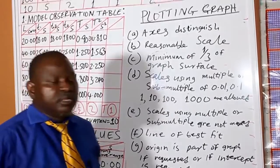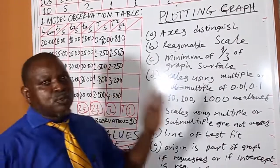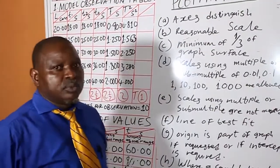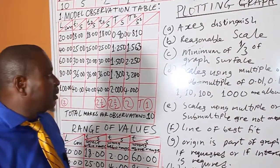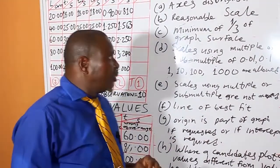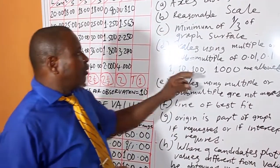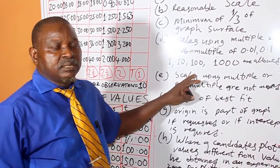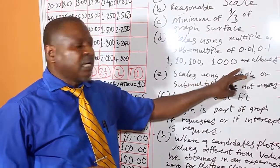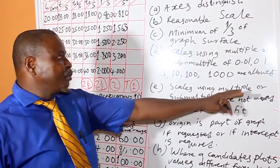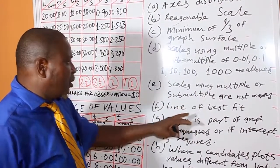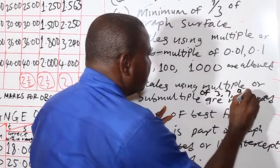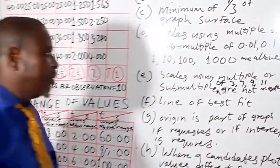Listening with scale. This is where many students have a lot of challenges when it comes to choosing a reasonable scale. A scale using multiple or sub-multiple of 0.01, 0.1, 1, 10, 100, and 1000 are allowed. Scales choosing multiple or sub-multiple of 3, 7, 9, and 11 are not allowed.